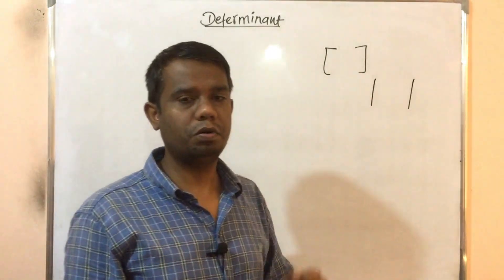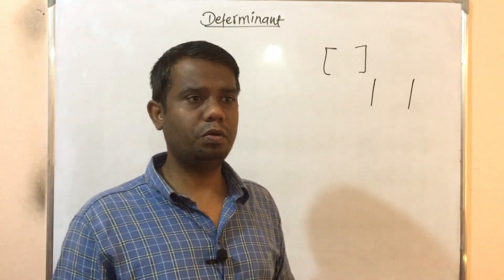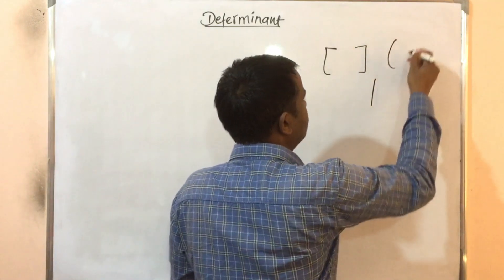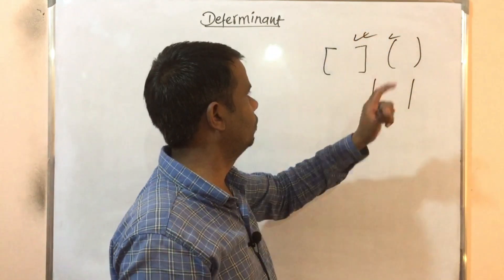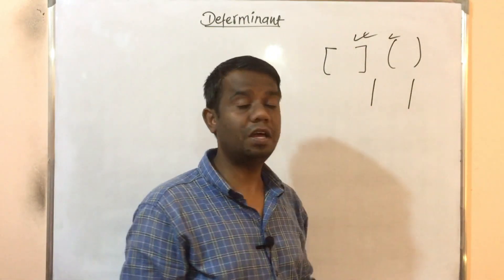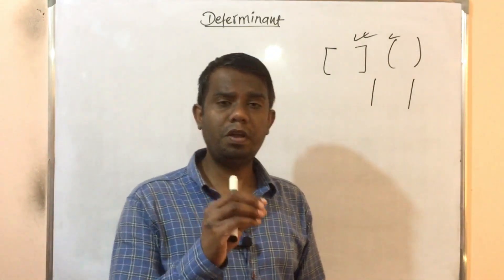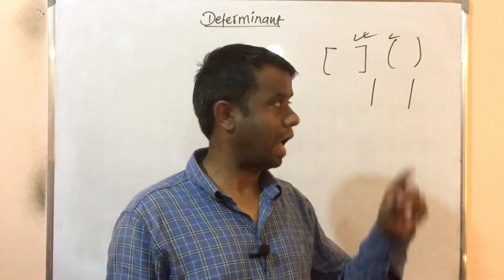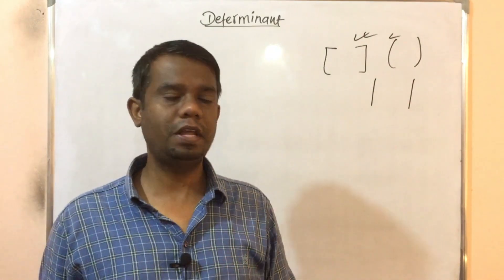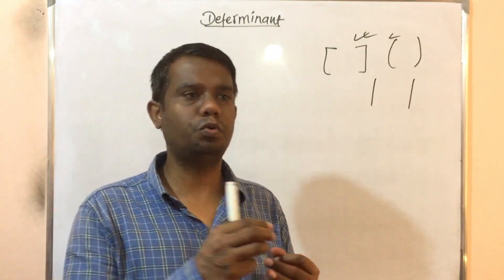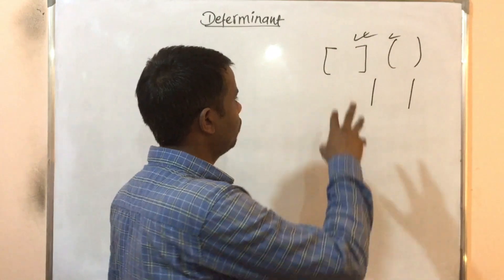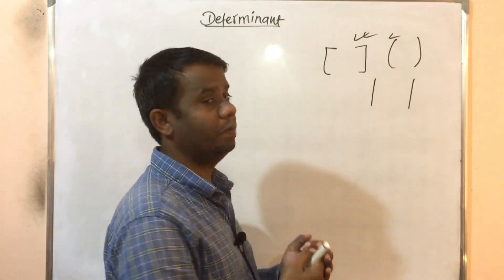So every element has a row element, a column element, and a sign. The sign with the row and column determines the sign of each element. For the determinant of a matrix, the order of the matrix is important. The matrix must be a square matrix — meaning rows equal to columns — so it can be one by one, two by two, or three by three. Only then can we find the determinant.